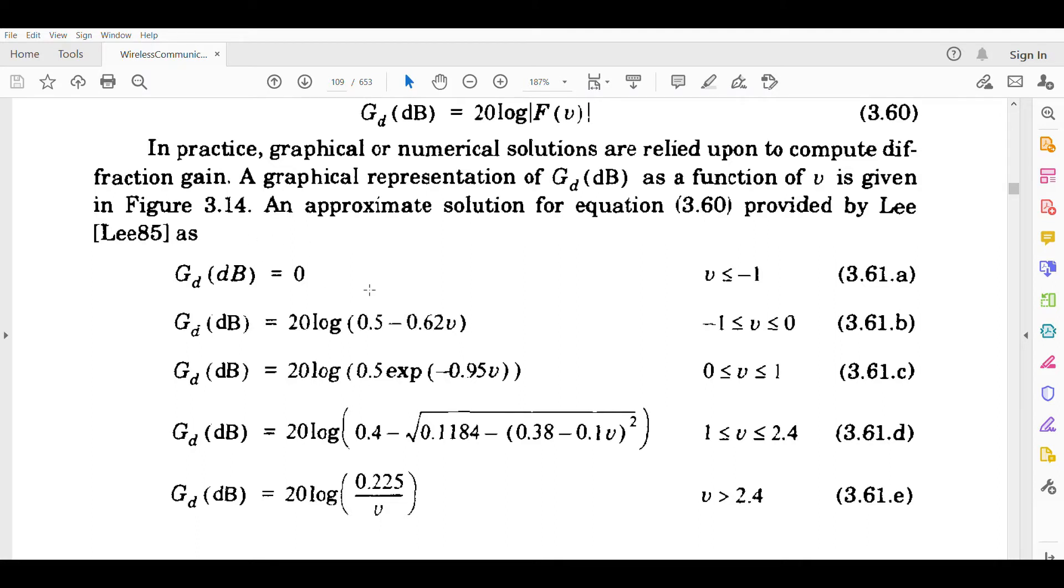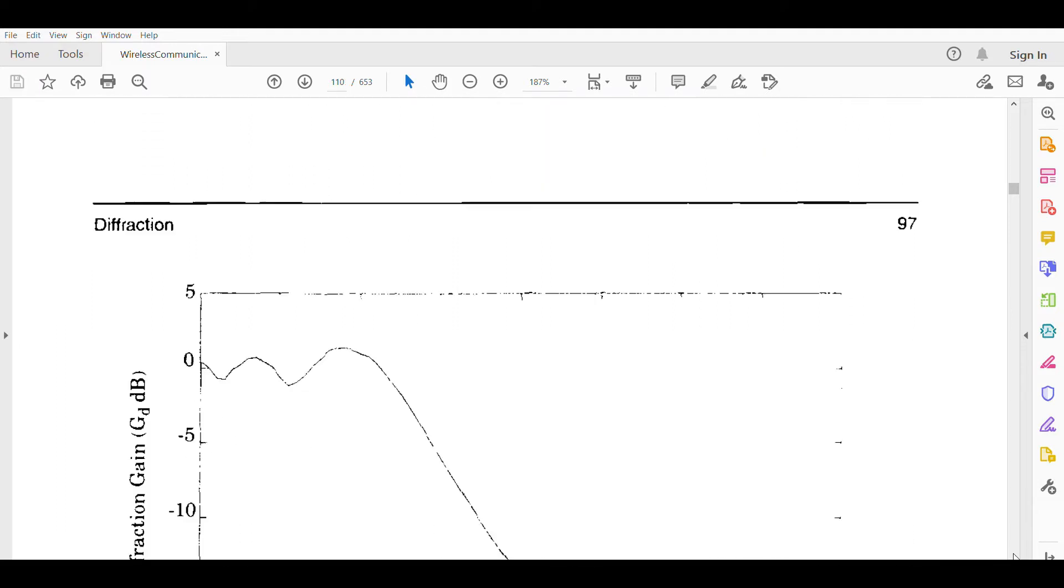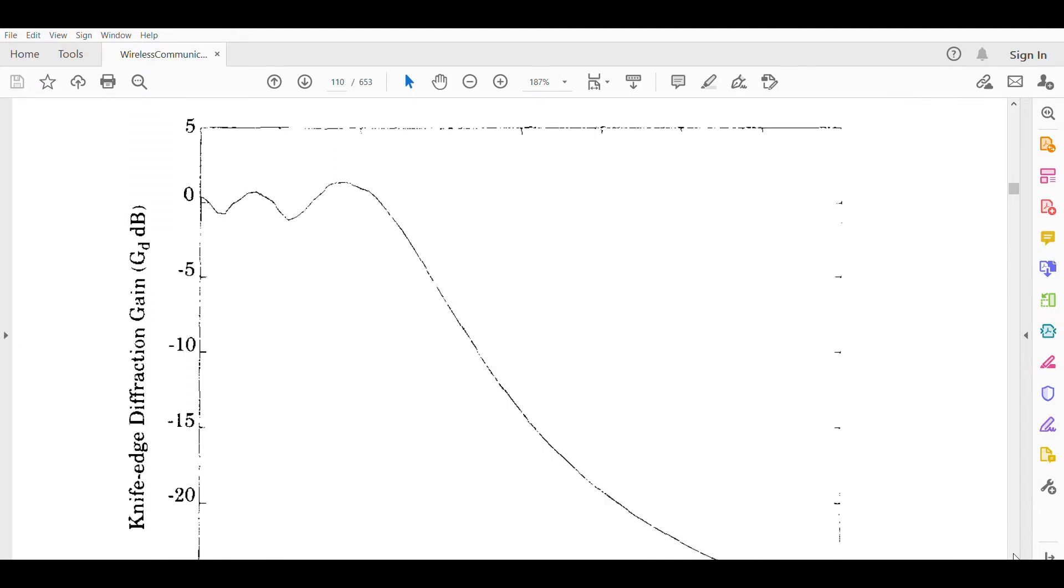An approximate solution of equation 3.60 can be given by different equations depending on the value of the parameter v. For example, if v is less than minus 1, greater than minus 1, or in other ranges, different formulas apply. This particular researcher Lee gave this model in 1985 and predicted these values through his experiments. This is numerical - you can see it and solve it.